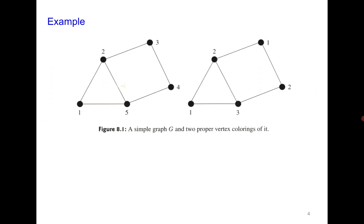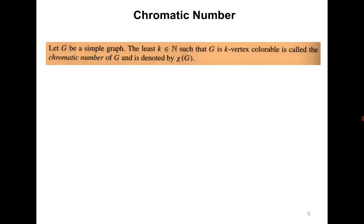If the order of the graph is n, then it is always n-colorable because you can give a different color to each vertex. If the graph is k-colorable, then the least k for which it is k-colorable gives you the chromatic number, denoted χ(G) — the minimum number of colors required to color the graph.